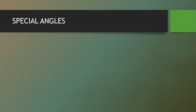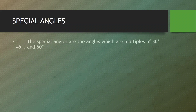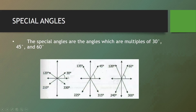Let's now move on to special angles. Special angles are angles which are multiples of 30 degrees, 45 degrees, and 60 degrees. For multiples of 30, we have 30, 120, 210, and 330. For 45, we have 45, 135, 225, and 315. For multiples of 60, we have 60, 120, 240, and 300 degrees. These are the special angles.